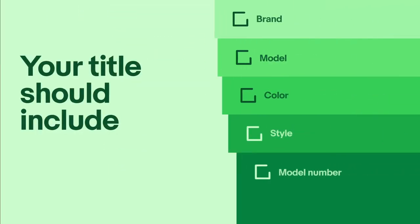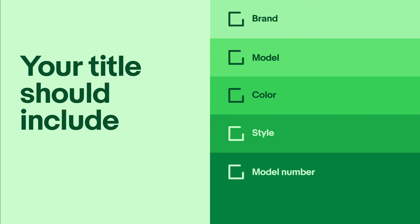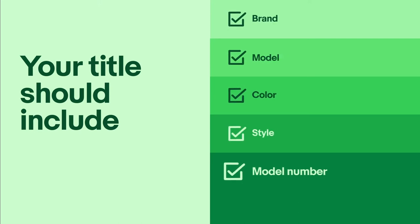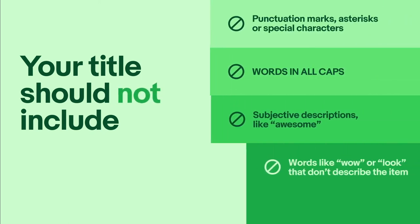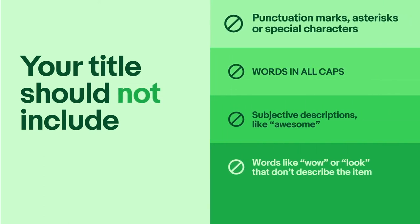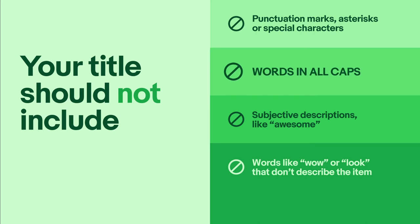Creating a strong title is easy. Simply state what your item is by including as many key details as you can, such as brand, model, color, style, and model number. Your title should not include punctuation marks, asterisks, or special characters, or words in all caps.